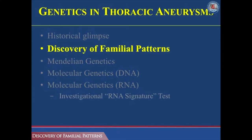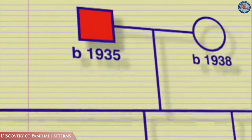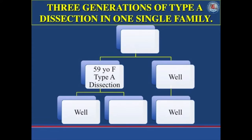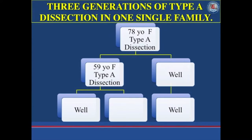As seen in this pedigree, a father passed the diathesis towards aortic dissection to each and every one of his natural offspring. In medicine, our patients teach us what we need to know. I was making rounds on a 59-year-old woman, three days after operating on her for type A aortic dissection. She told me I had operated on her mother three years ago, and when I asked if anyone else in her family had been affected, she became inconsolable — the tears would not stop flowing.